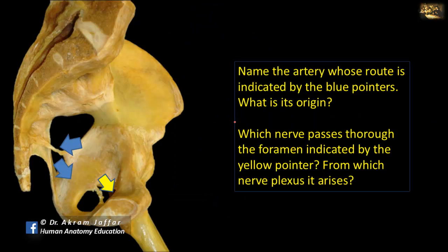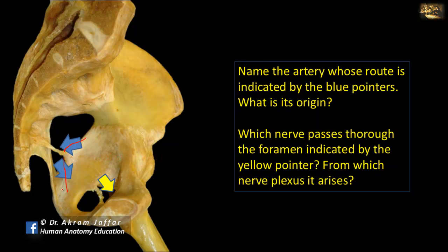Name the artery whose route is indicated by the blue pointers, and what is its origin? The artery leaves the pelvis through the greater sciatic notch, is related to the ischial spine in the gluteal region, and then leaves the gluteal region to enter the perineum. This is the internal pudendal artery. It arises from the anterior division of the internal iliac artery in the pelvis.